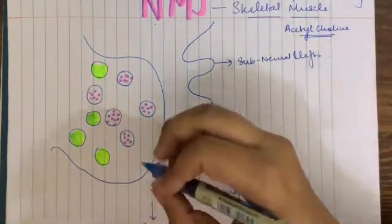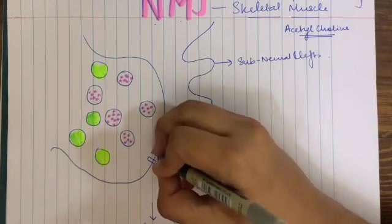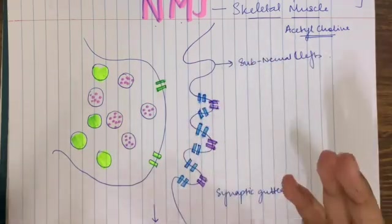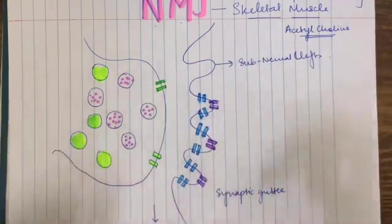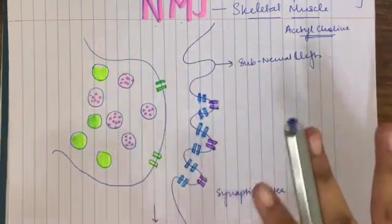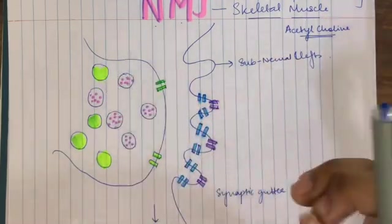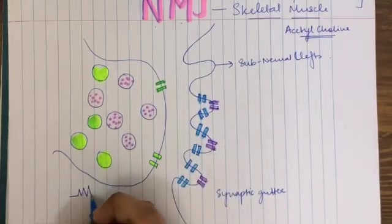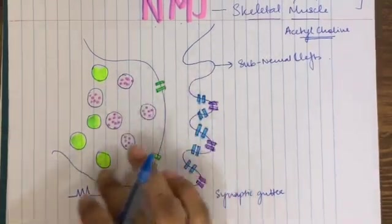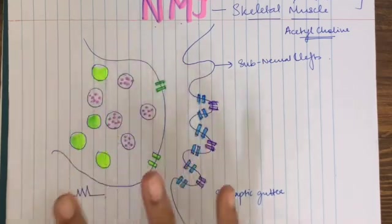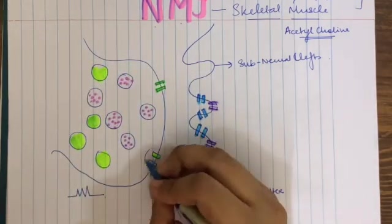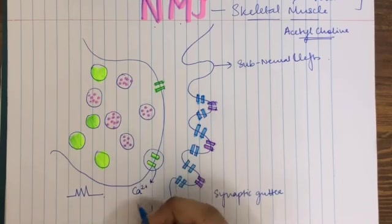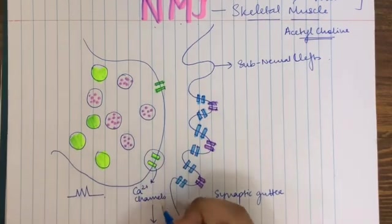Now I am going to be drawing a few channels here. Let us get into the mechanism of how an electric impulse transmits from the neuron to the muscle. When an action potential reaches the terminal of a neuron, this stimulates calcium channels to open up.